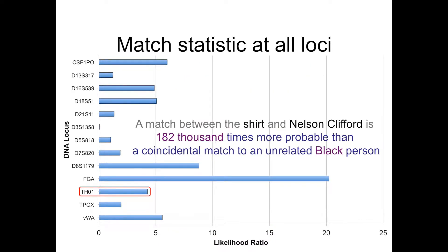These genetic loci are independent, so multiplying together these values, the match statistic or likelihood ratio magnitude is shown on the scale on the right, with the 13 loci listed from top to bottom. We can state in English that a match between the shirt and Nelson Clifford is 182,000 times more probable than a coincidence.